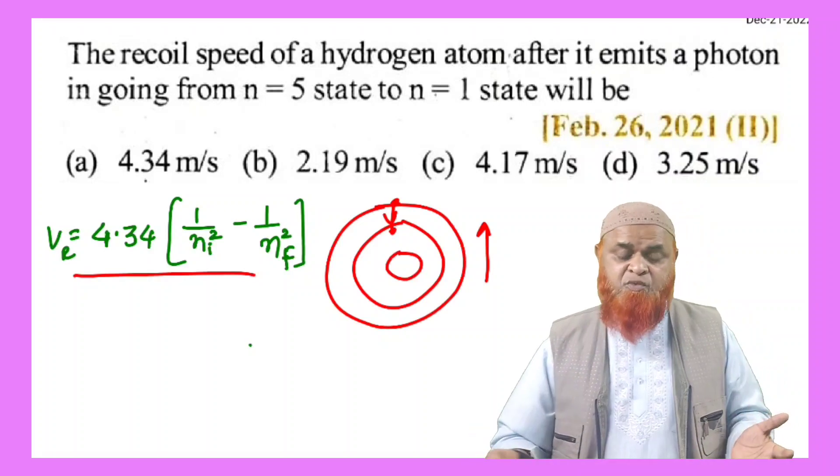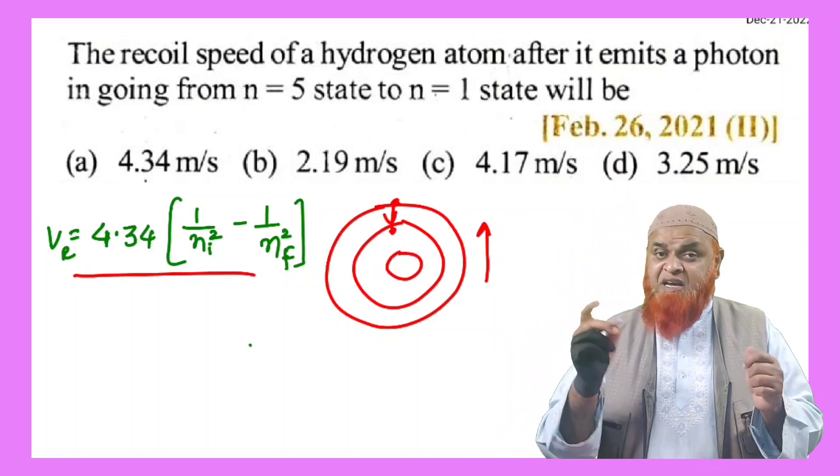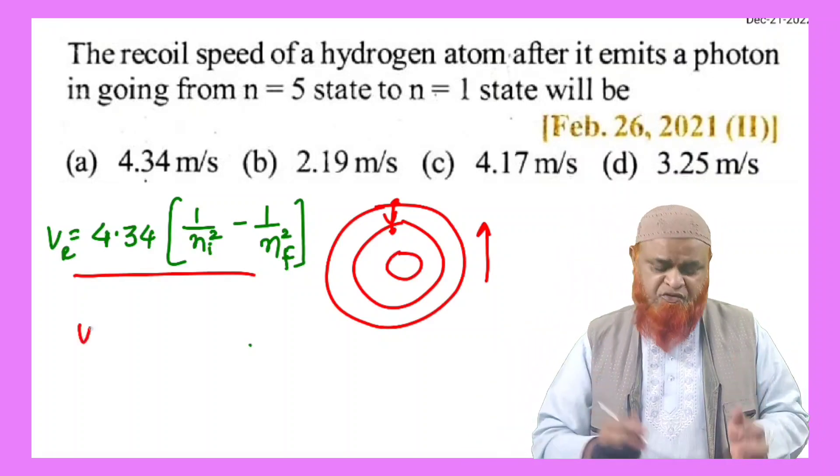You just substitute the formula here now. So therefore, recoil velocity is equal to 4.34, 1 by 1 square minus 1 by 5 square.